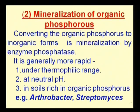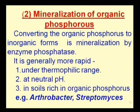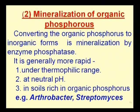The next step is mineralization of organic phosphorus — converting organic phosphorus to its inorganic form — carried out by the enzyme phosphatase at low or high pH. This occurs more rapidly under thermophilic conditions, at neutral pH, and in soil rich in organic phosphorus. The enzyme phosphatase is commonly secreted by organisms like Arthrobacter and Streptomyces.